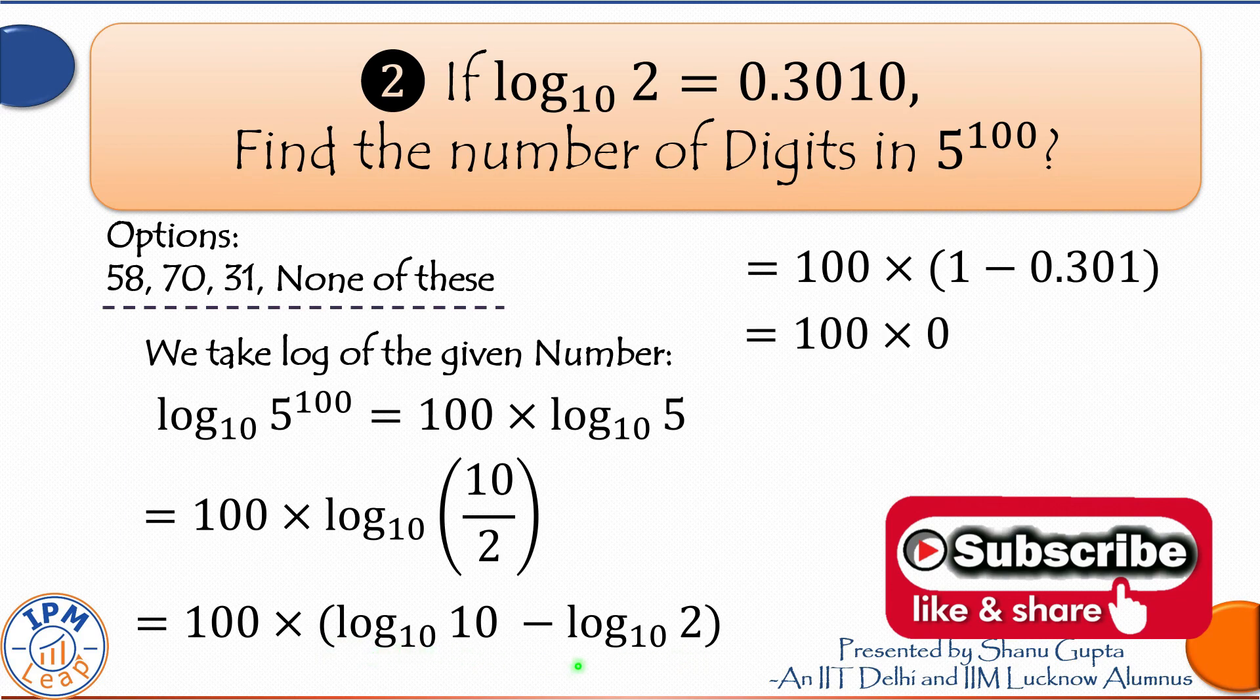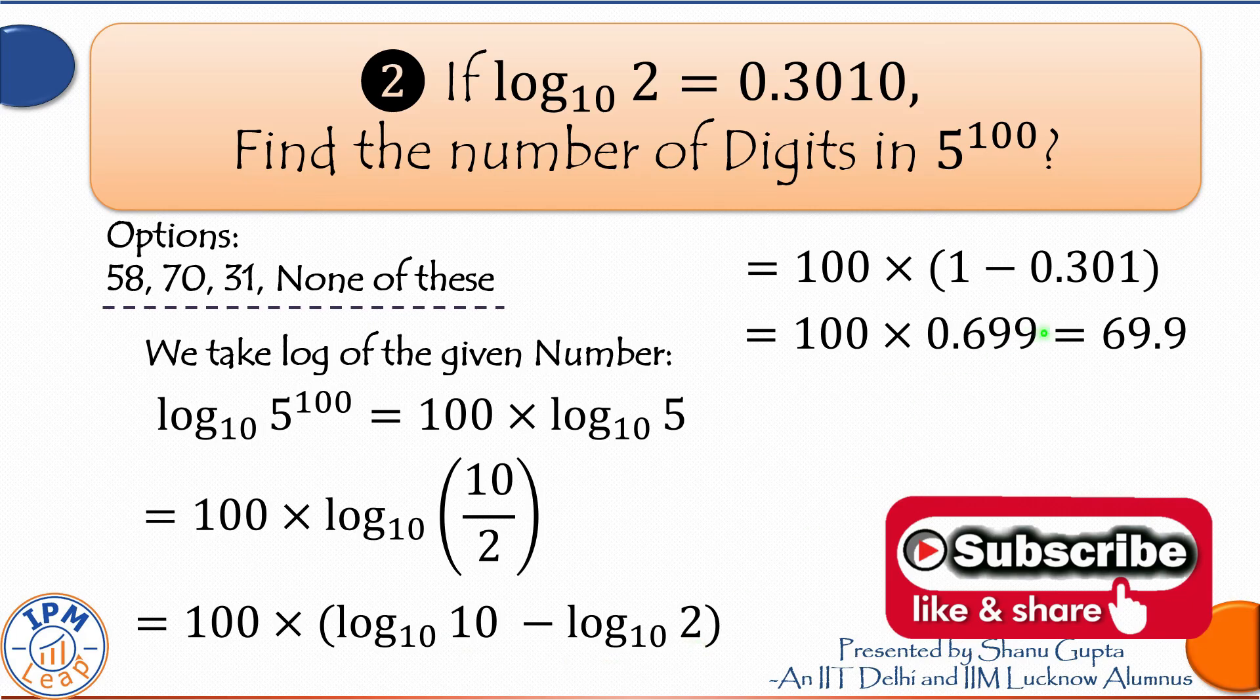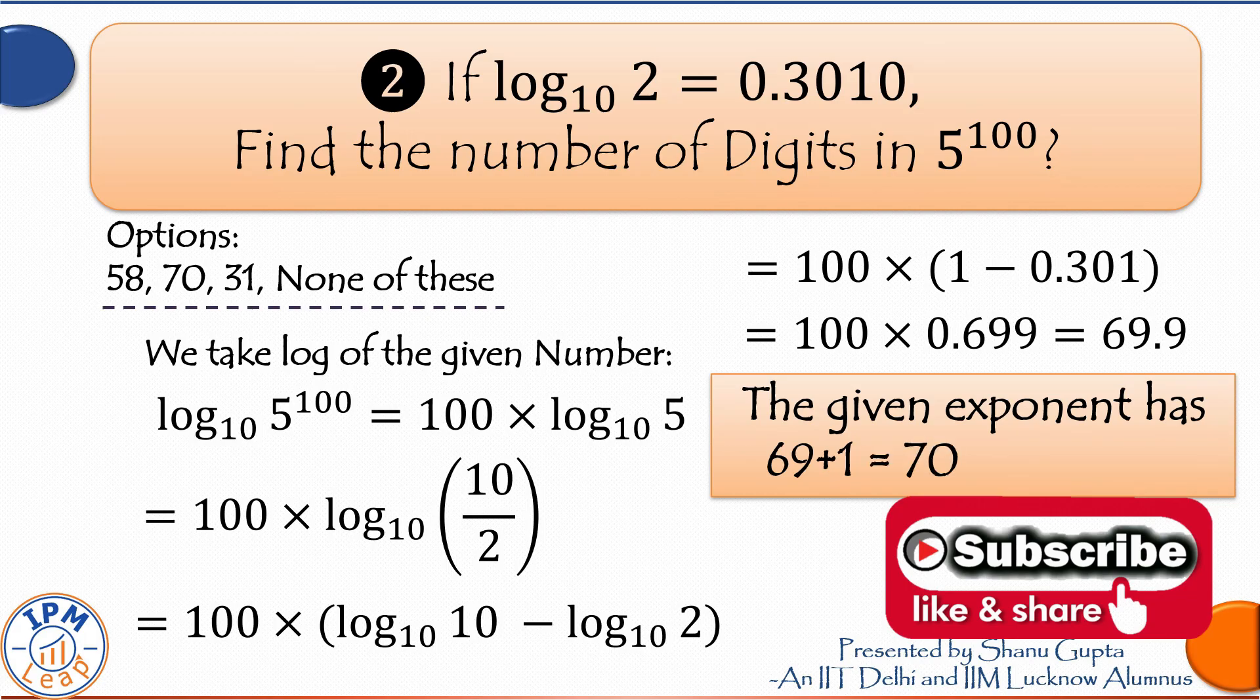Let's substitute values now. Log 10 is 1 and log 2 is 0.301. So 100 times 0.699, this will be equal to 69.9. The characteristic is 69. And we already know that the number of digits in the given exponent should be 1 more than the characteristic. Our answer to this question is 70. Let's take that option.